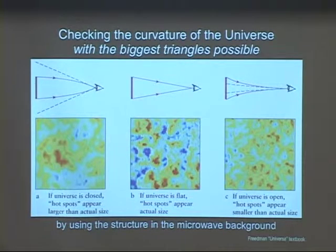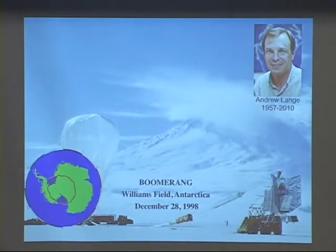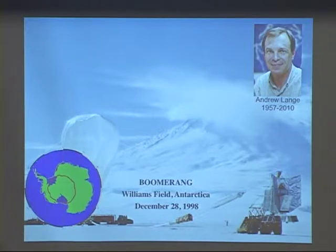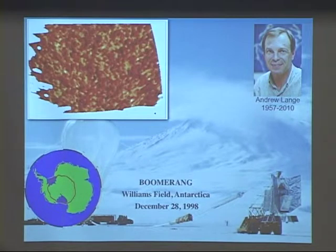This was done by a whole bunch of experiments trying to do this early. Around 2000, there was one by Andrew Lang and his team called Boomerang. They launched very sensitive microwave antennas up to about 100,000 feet to get above the atmosphere. They let it go around in this polar vortex — we hear a lot about polar vortexes in Chicago these days, but this is a different one. They collected this tremendous data and made a map of a big chunk of the sky.